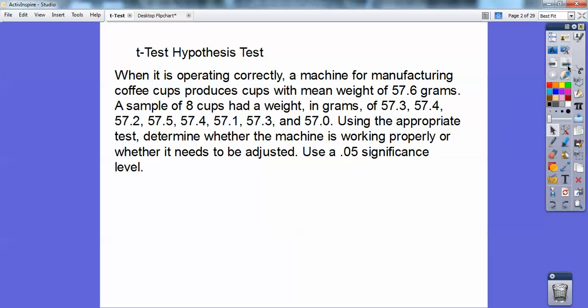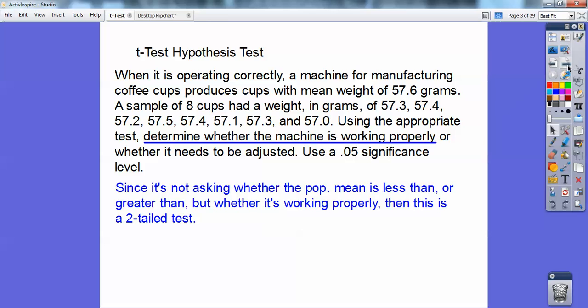Use the appropriate test to determine whether the machine is working properly or if it needs to be adjusted, and use a .05 significance level. Since it's not asking whether the pop mean is less than or greater than, but whether it's working properly, this is a 2-tailed test.